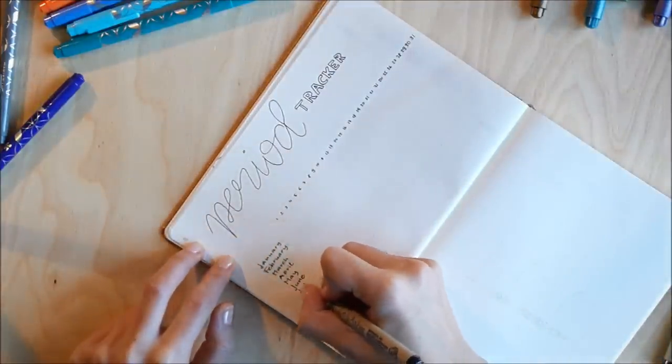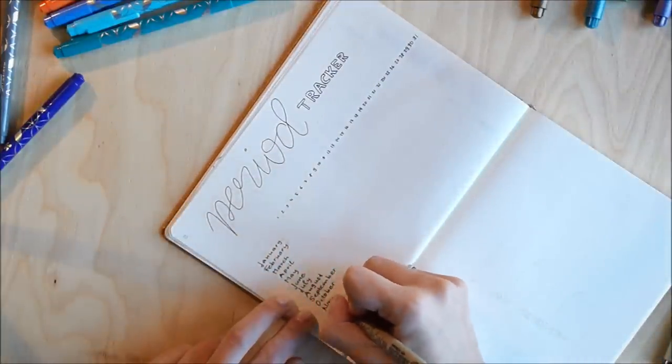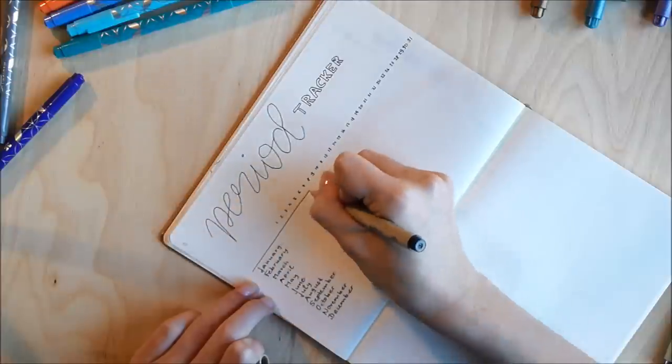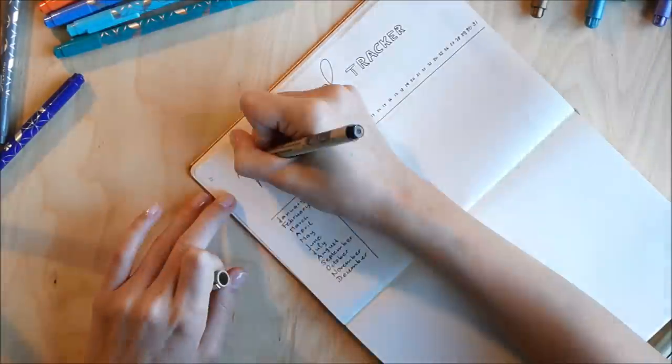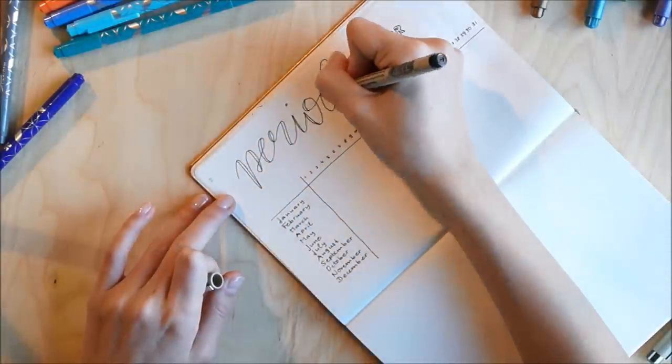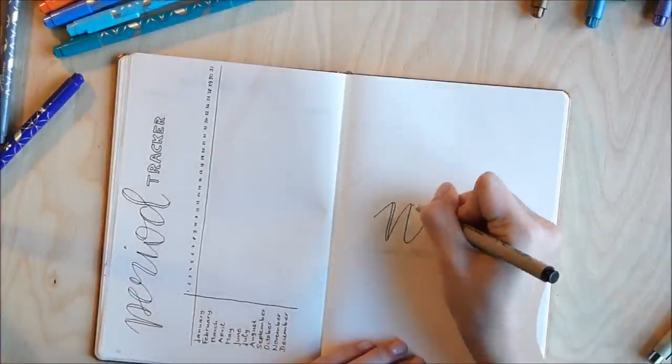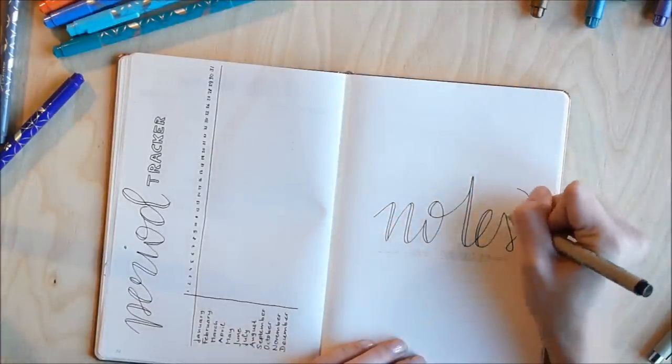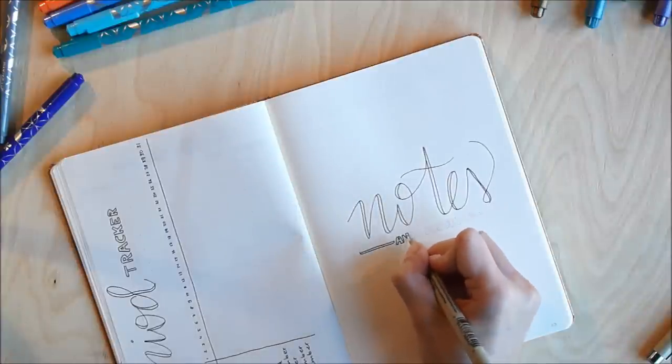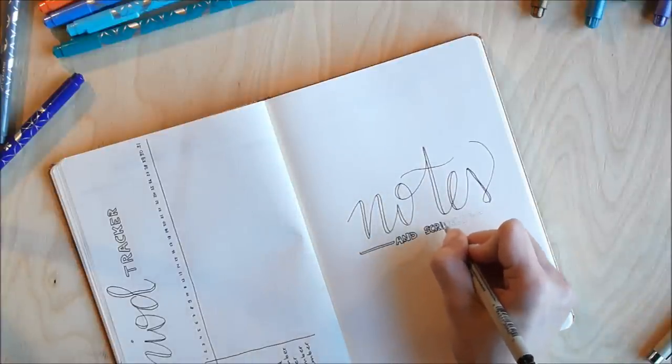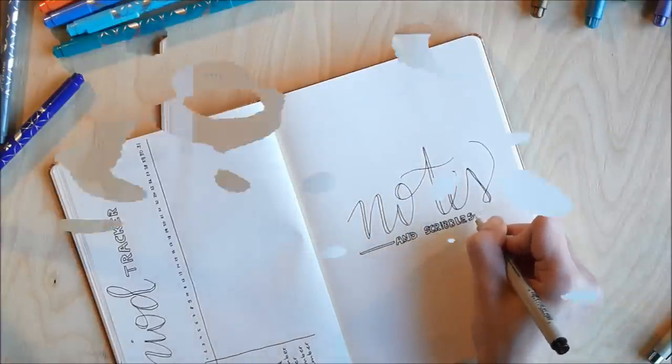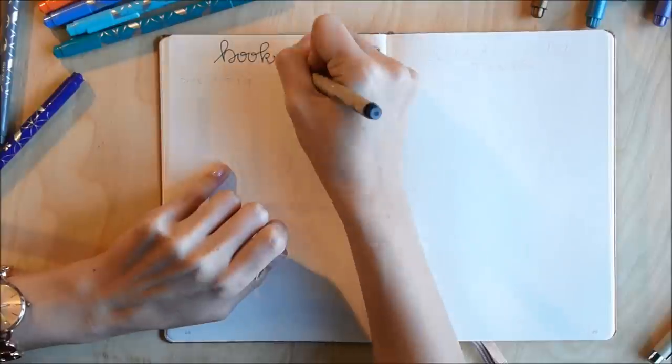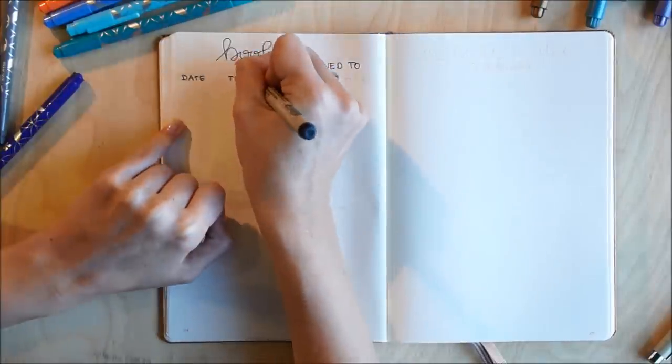Next up I wanted to have a visual tracker of my period just to make sure that I'm on top of things and know when it's time and just to be prepared. On the other side I wanted to have a brain dump page but I called it Notes and Scribbles because I think that's a little nicer than calling it a brain dump page.